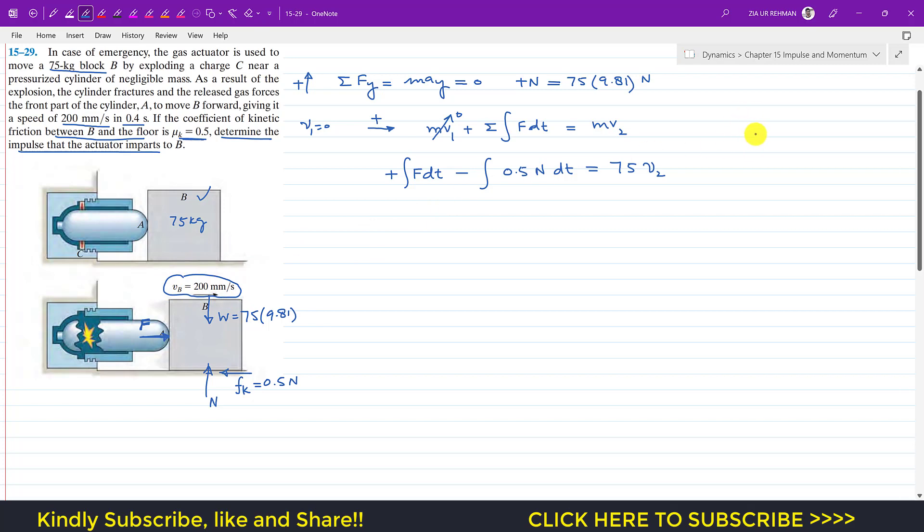The mass of the block is 75, and v2 is given as 200 mm per second. That is vB, the final velocity. Let's convert this into meters per second. One meter has 100 centimeters, and one centimeter has 10 mm, so this gives us 0.2 meters per second.